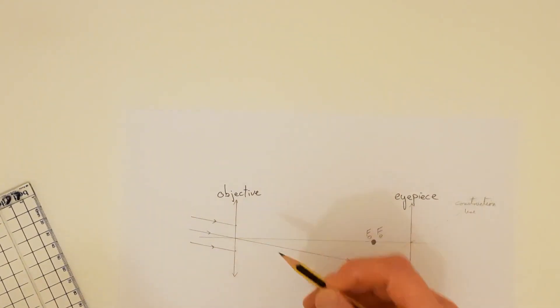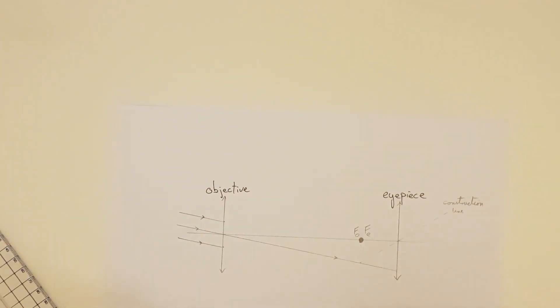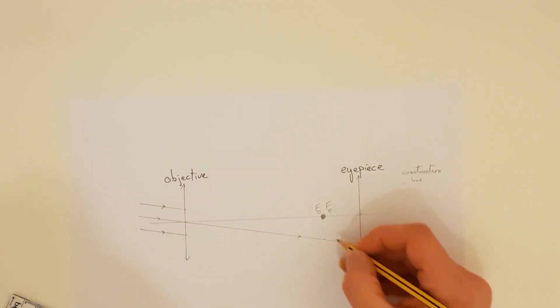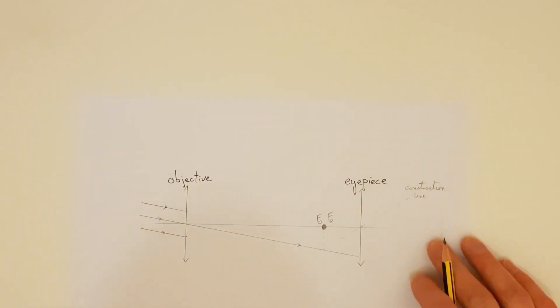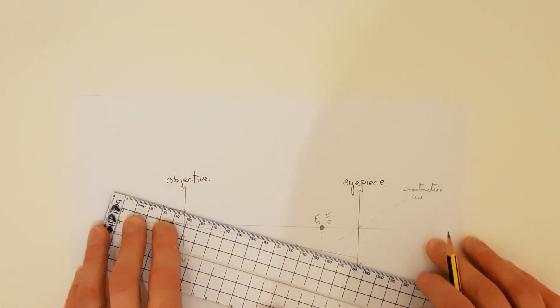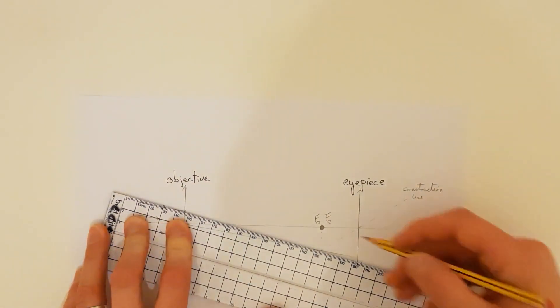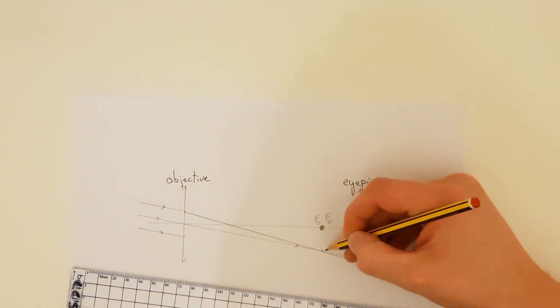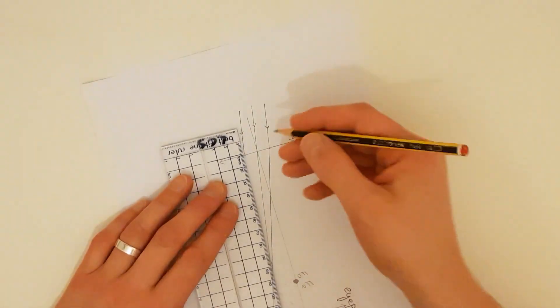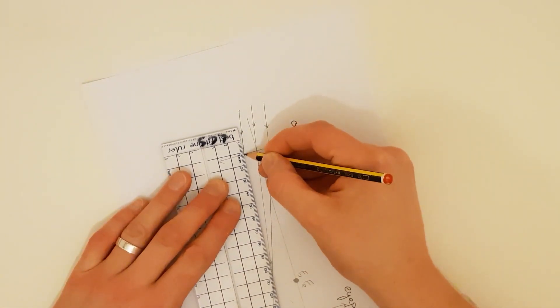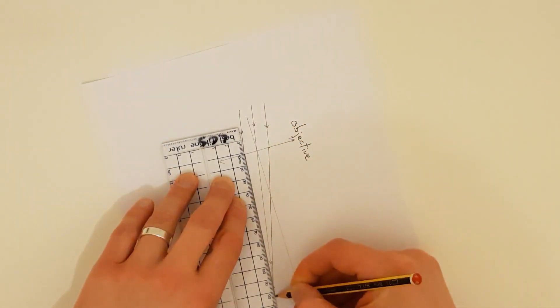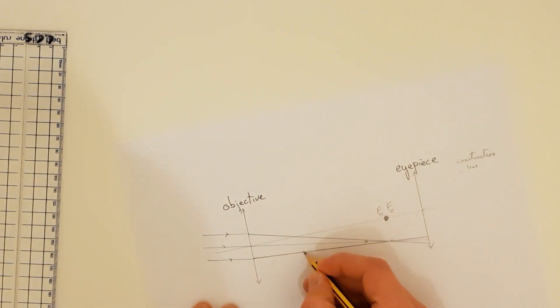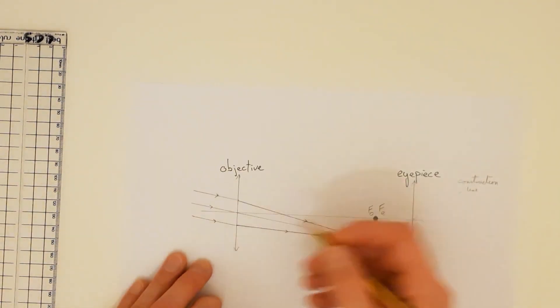And again I'm going to put some arrowheads on these just to show the direction of travel. But these two rays when they meet my objective lens they will refract, they will change direction and they will be refracted so that they come to a focus here at the focal length of this objective lens. So I'm going to have my rays deviate, refract through this lens, converge at this common principal foci here.